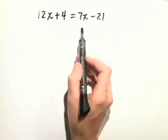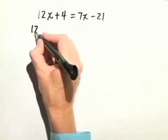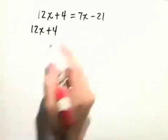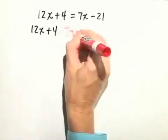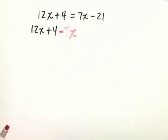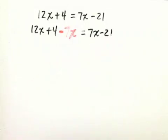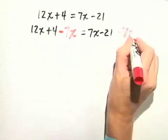So we'll subtract 7x from both sides. So we have 12x plus 4 minus 7x equals 7x minus 21, and again minus 7x.